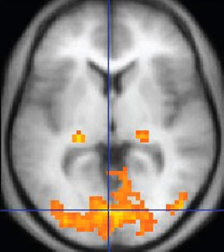An MRI artifact is a visual artifact — an anomaly during visual representation. Many different artifacts can occur during magnetic resonance imaging, some affecting the diagnostic quality, while others may be confused with pathology. Artifacts can be classified as patient-related, signal processing-dependent, and hardware-related.